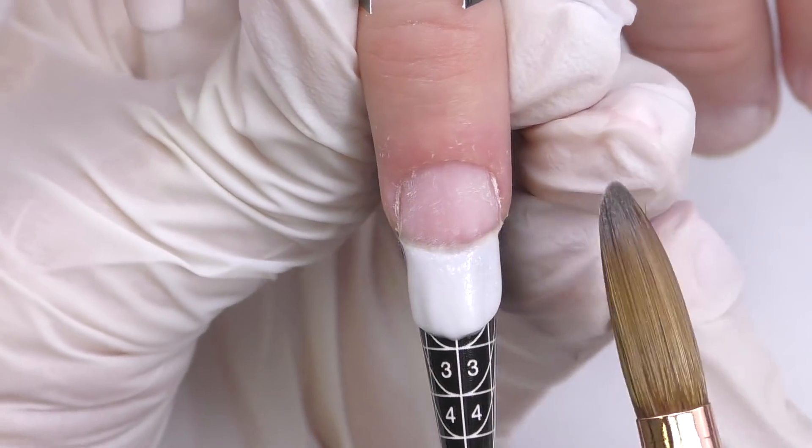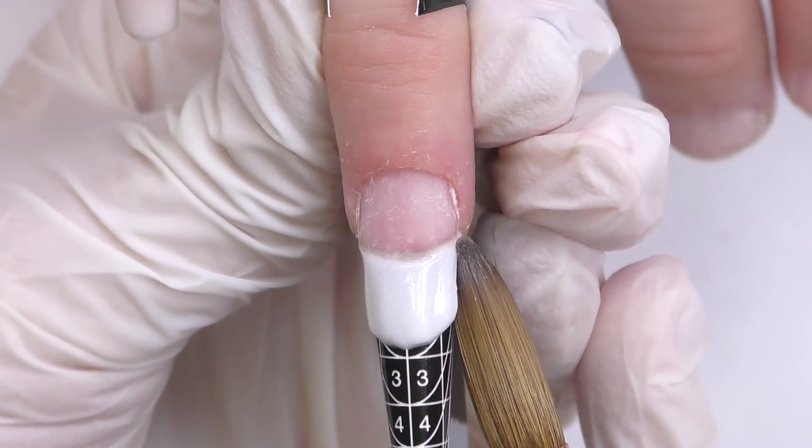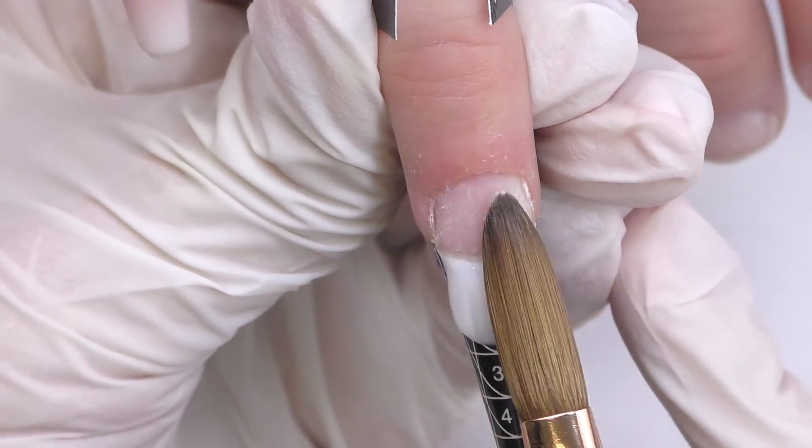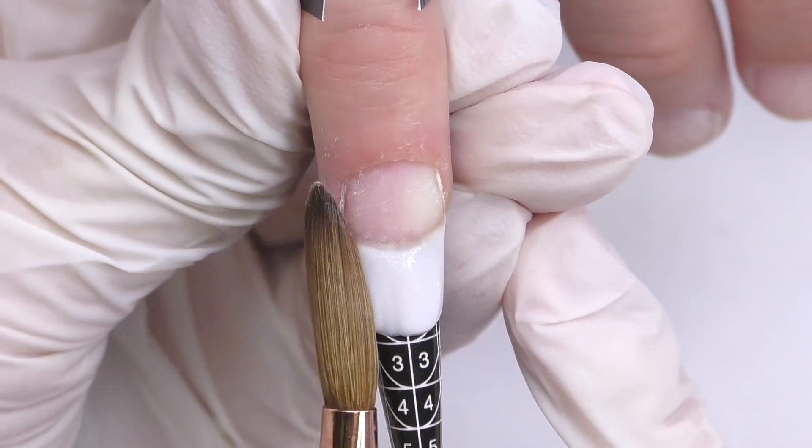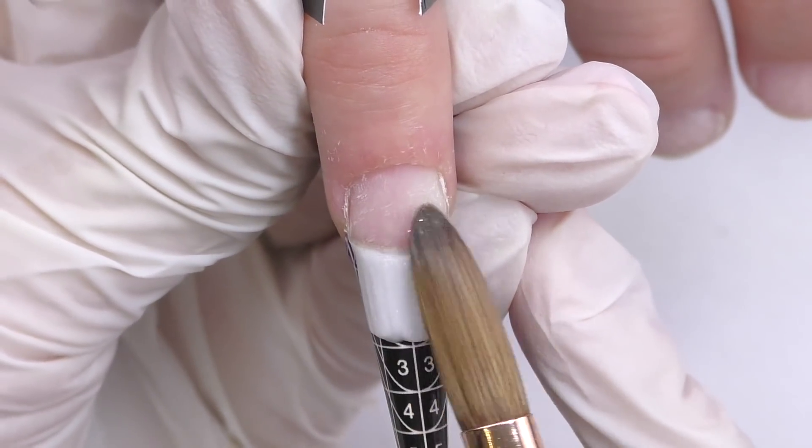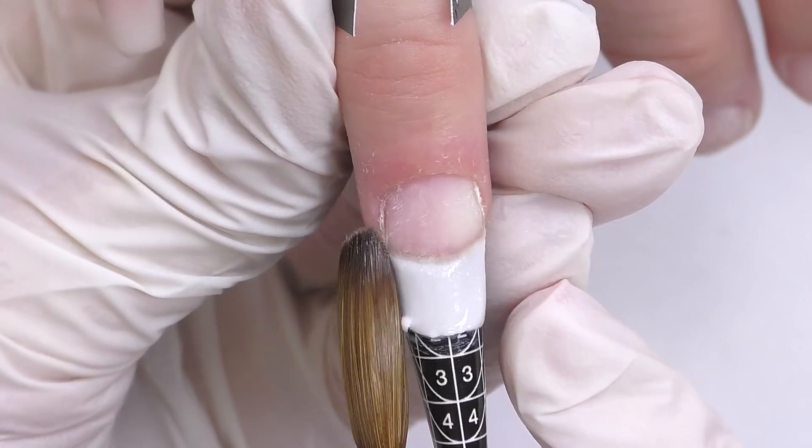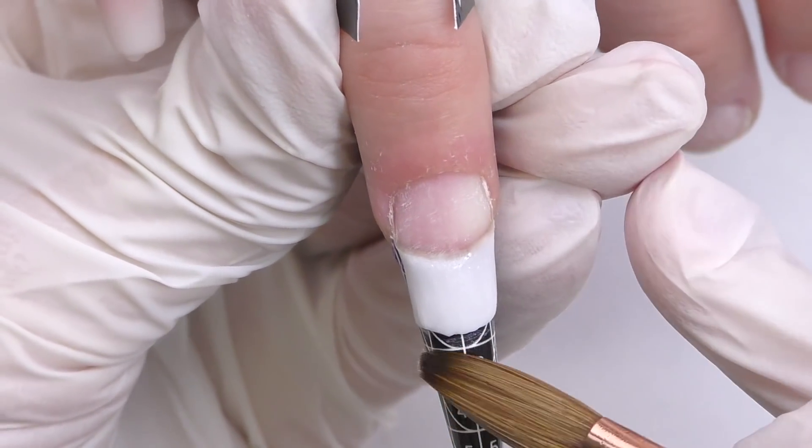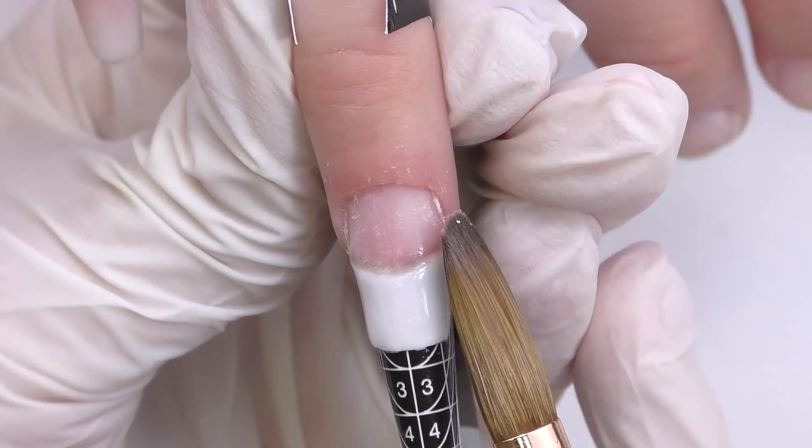But for some reason, this one was going too strong. I just didn't like how it looks. This nude color seemed too transparent and like see-through the nail this time, even though it didn't seem like that to me before. So honestly, I was just working and hoping that maybe I will encapsulate it and it will look better.